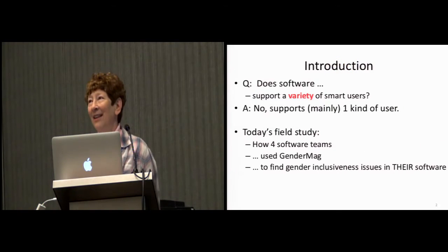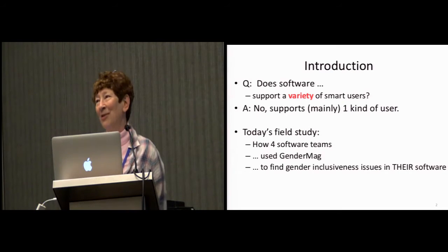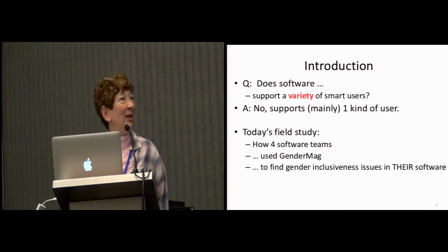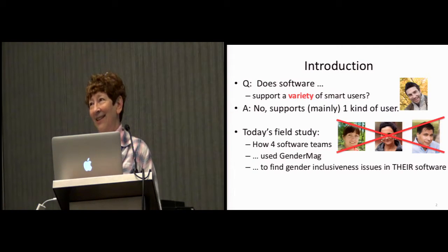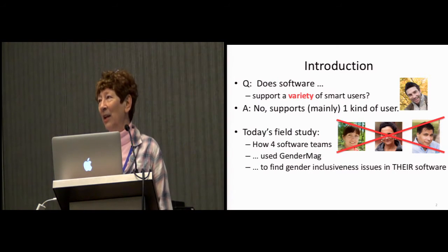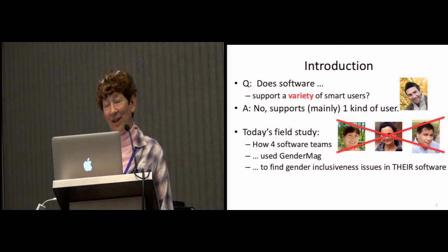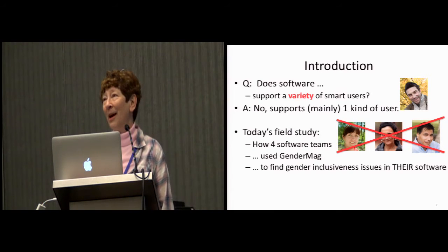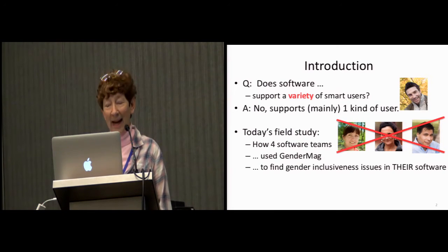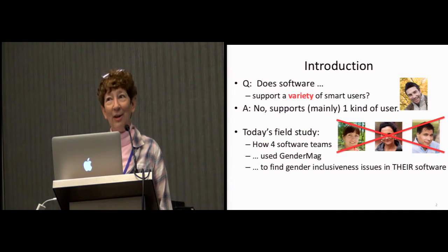The question that we've been interested in trying to address for a number of years is whether software supports a variety of smart users. The quick answer is no, not really. It tends to support some kinds of smart users, and a whole lot of other smart users aren't so very well supported. Today's field study tells you about how four software teams in the field, without us telling them what to do, used a new process that we've devised called GenderMag — a method to find gender inclusiveness issues in their own software.